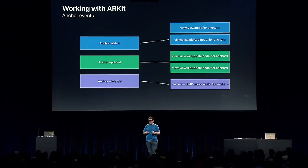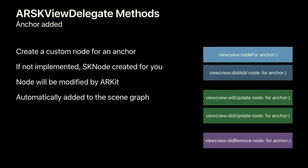ARSKViewDelegate provides methods tied to each of these events. The first is nodeForAnchor, called when a new anchor is added. ARKit maps the node returned from this method to the anchor passed in. If you don't implement it, a default empty SKNode is created automatically. The node returned will be moved, rotated, and scaled by ARKit to match its anchor, so any transform changes you make may be overwritten. Importantly, children assigned to this node won't have their transforms modified.